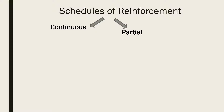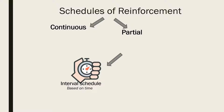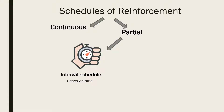As already mentioned, partial schedules only reinforce a small fraction of the subject's correct responses. Partial reinforcement schedules specify which responses will get reinforcement in terms of time or the number of required responses. Interval schedules require a minimum amount of time that must pass between successive reinforced responses — for example, five minutes. Responses which are made before this time has elapsed are not reinforced.